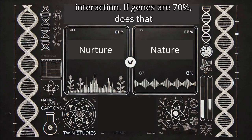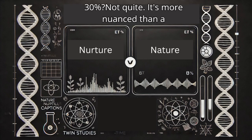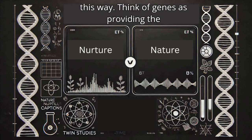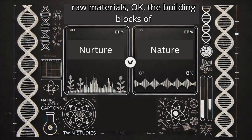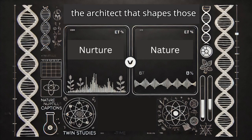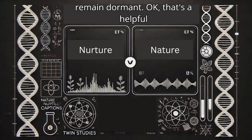All right, so let's unpack that interaction. If genes are 70%, does that mean environment only makes up the other 30%? Not quite. It's more nuanced than a simple percentage breakdown. Think of genes as providing the raw materials, the building blocks of who we are. Environment is kind of like the architect that shapes those materials, deciding which potentials are realized and which ones remain dormant.